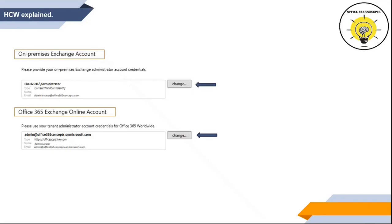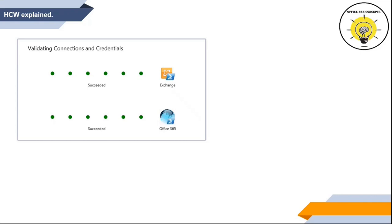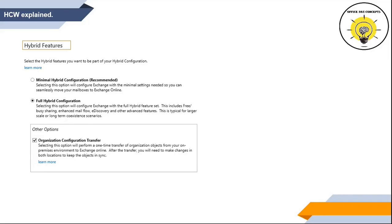Once you have entered credentials for on-premise and Office 365 admin accounts, HCW will try to log in to each server to validate if the credentials are valid. On the next page, select if you want to configure Minimal Hybrid or Full Hybrid deployment. If you want to configure hybrid for only mailbox move, you can select Minimal Hybrid. And if you want all the features of hybrid, you can select Full Hybrid Configuration.